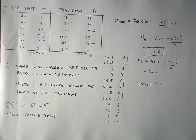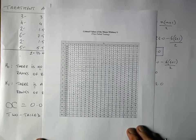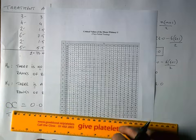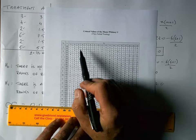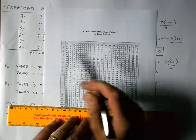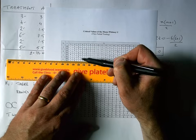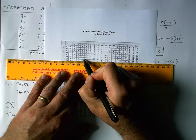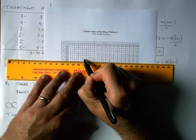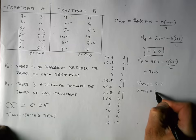Next, I need to determine a critical value to help us accept or reject our null hypothesis. I go to the critical values table for the Mann-Whitney U test for two-tailed testing. I need N1, the number of values in group one (treatment A), which is six, and N2 for group two (treatment B), also six. Looking at the intersection of row six and column six at alpha equal to 0.05, the critical value is five. So my U critical equals 5.0.